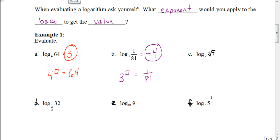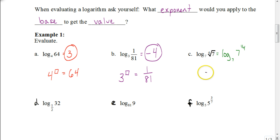This one looks really weird: log base 7 of the 4th root of 7. Remember what we've learned about roots — we can write it as a rational exponent since it's currently in radical form. If we write the 4th root of 7 as a rational exponent, it would be 7 to the 1/4 power. So I'm asking what exponent I apply to 7 to get 7 to the 1/4 power. The answer is just 1/4.